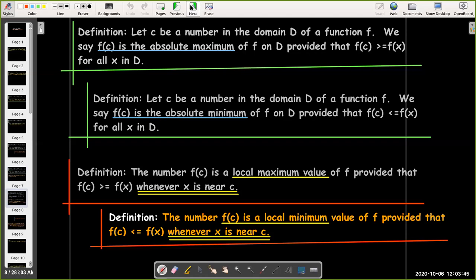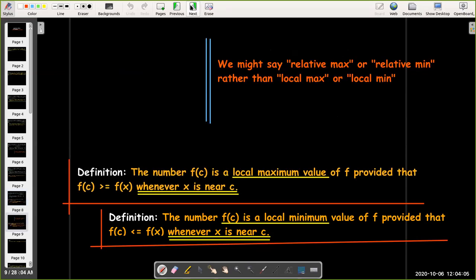And if you have a local max, you may also have a local min. That would mean that the function value, the y-coordinate, is smaller than all of the y-coordinates around it, but might not be the absolute smallest. Instead of saying local min or local max, we may use the phrase relative max or relative min.